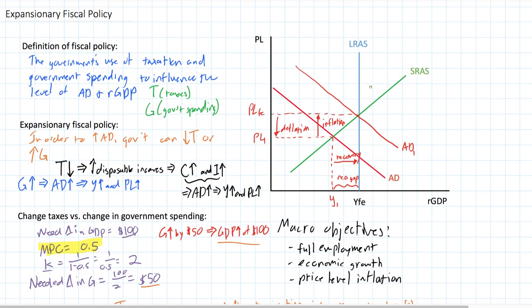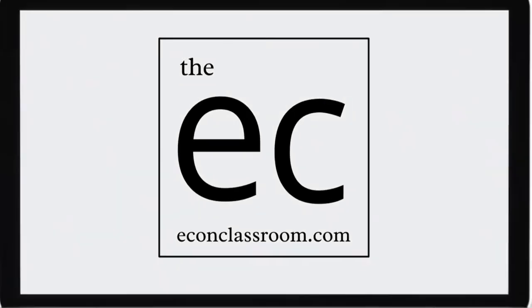In this video we defined fiscal policy and talked about how it can be used to help an economy recover from a demand-deficient recession. Tax cuts and increases in government spending are both going to boost aggregate demand and lead to a greater level of output and a higher price level.